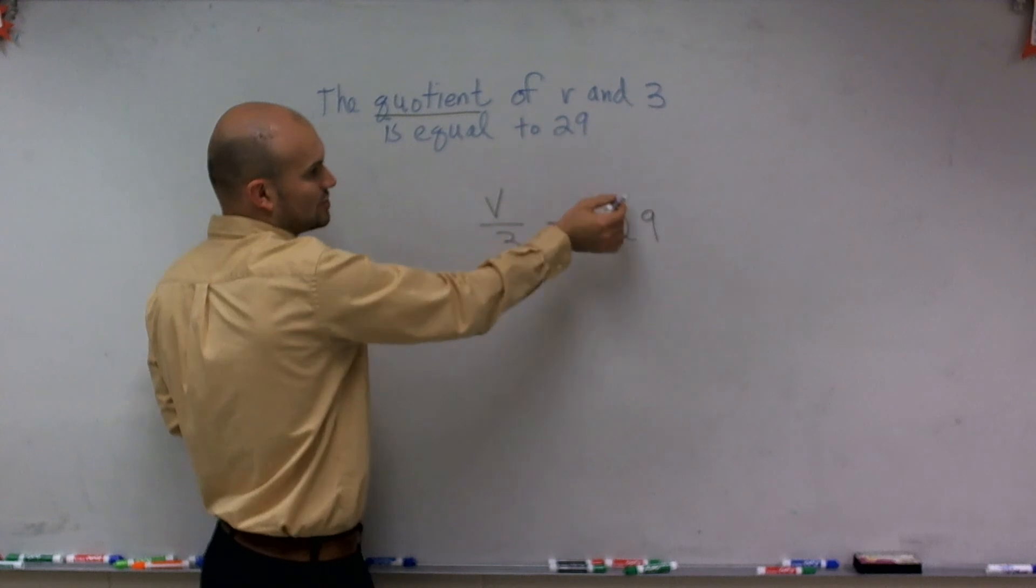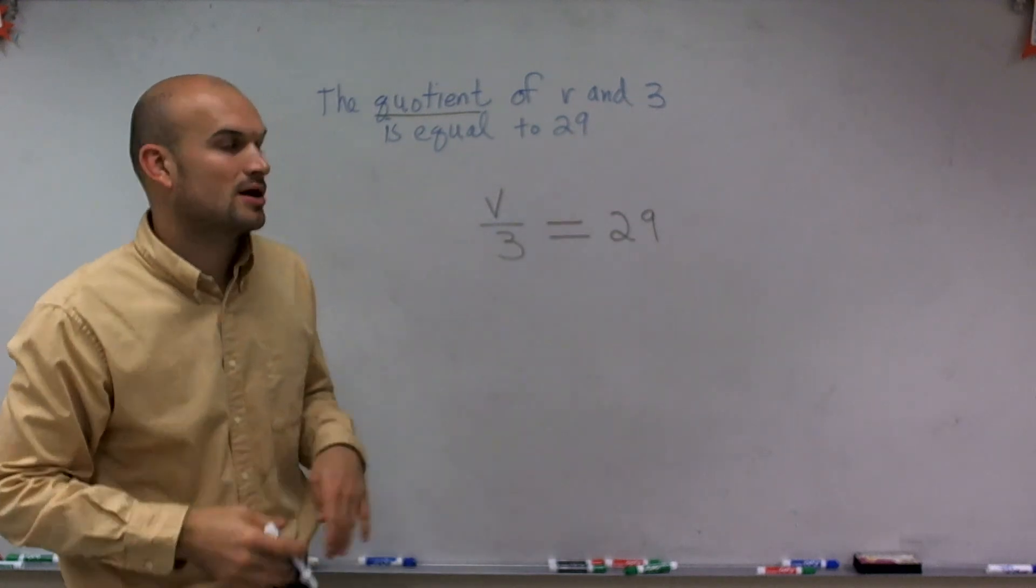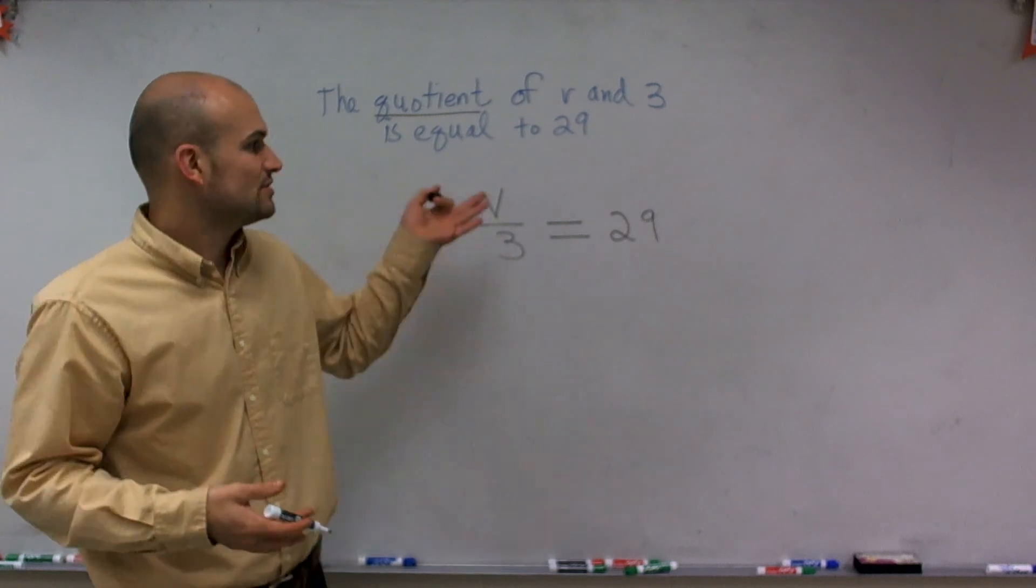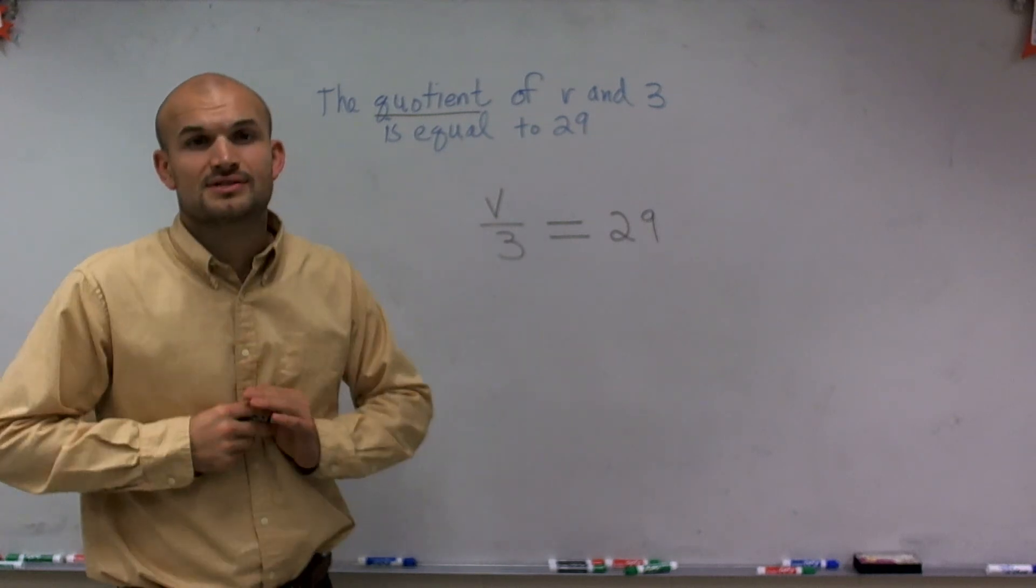You have your equal sign, 29, and every part is going to play a part. It's also important to go back and look at your quotient and make sure that's going to be the operation you'll be using.